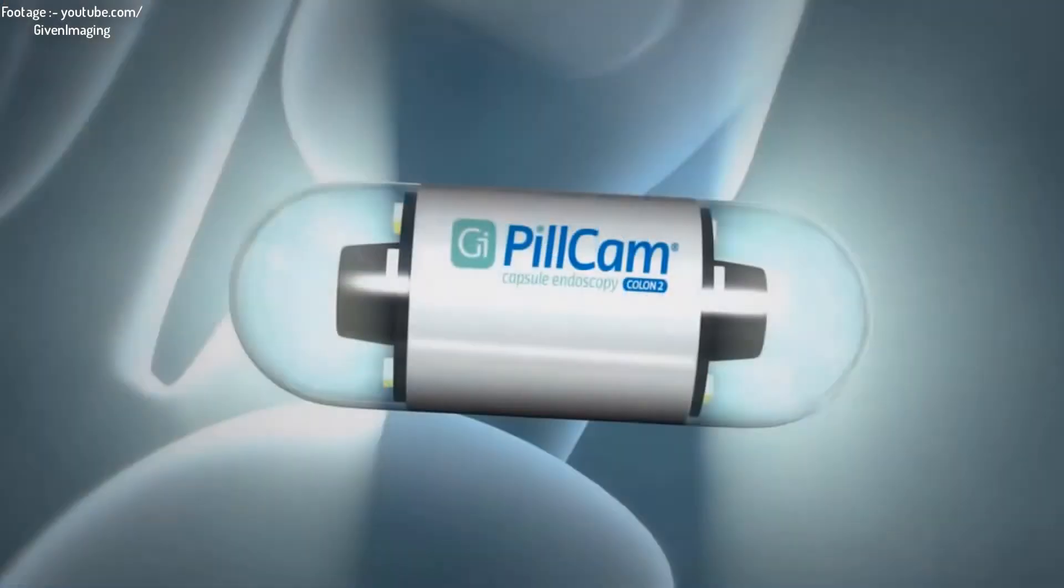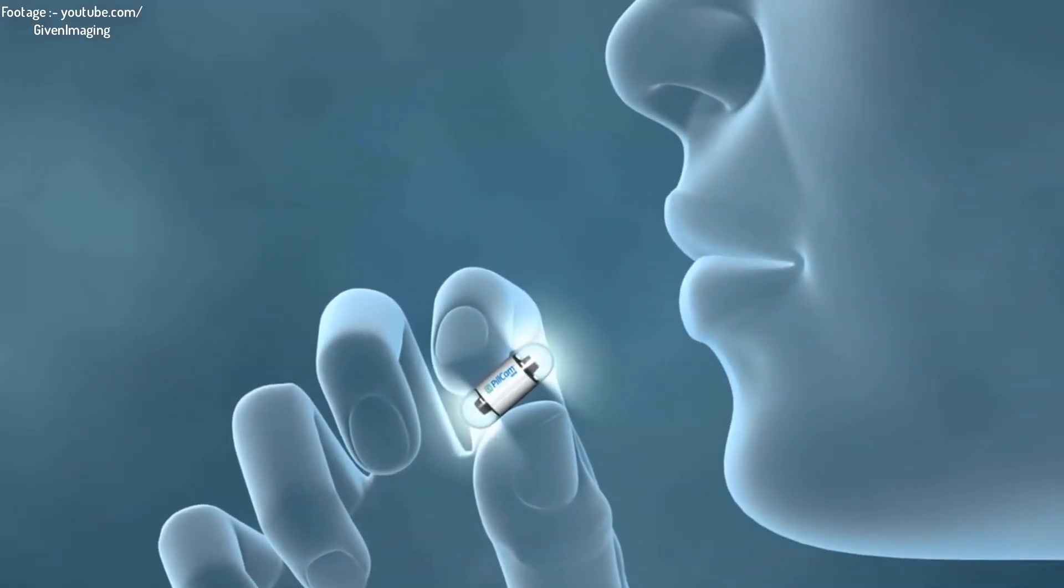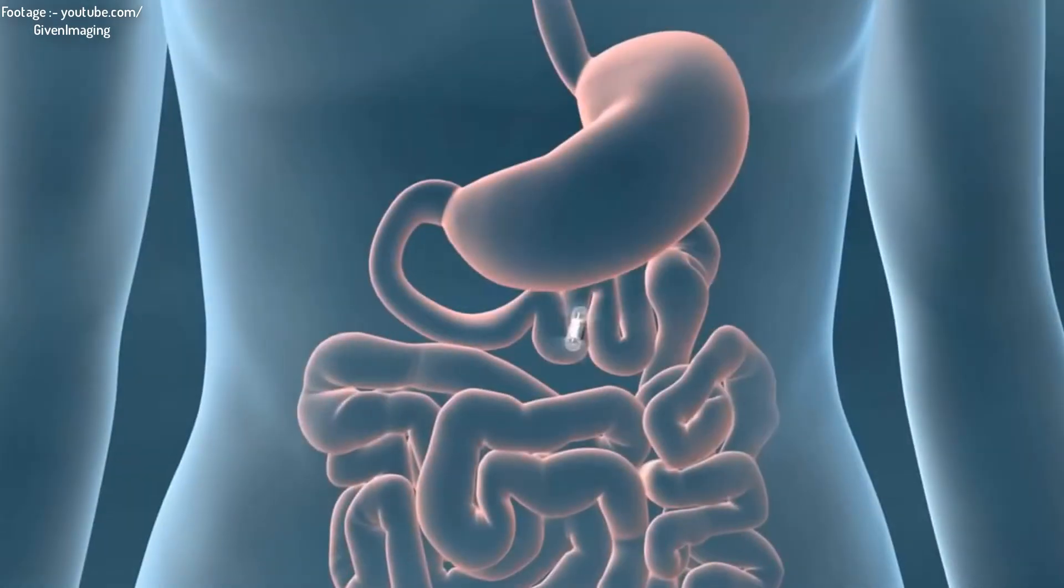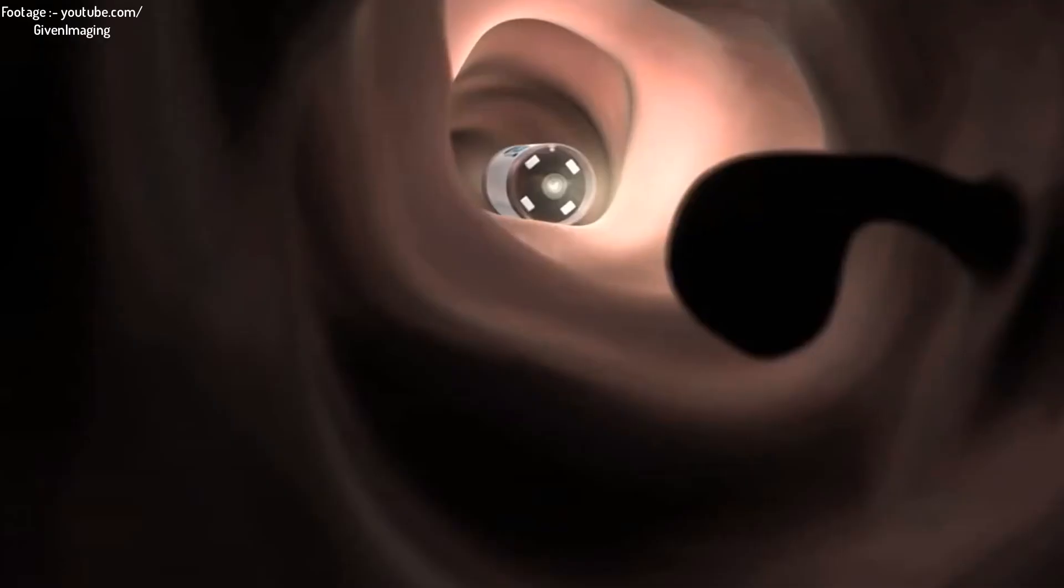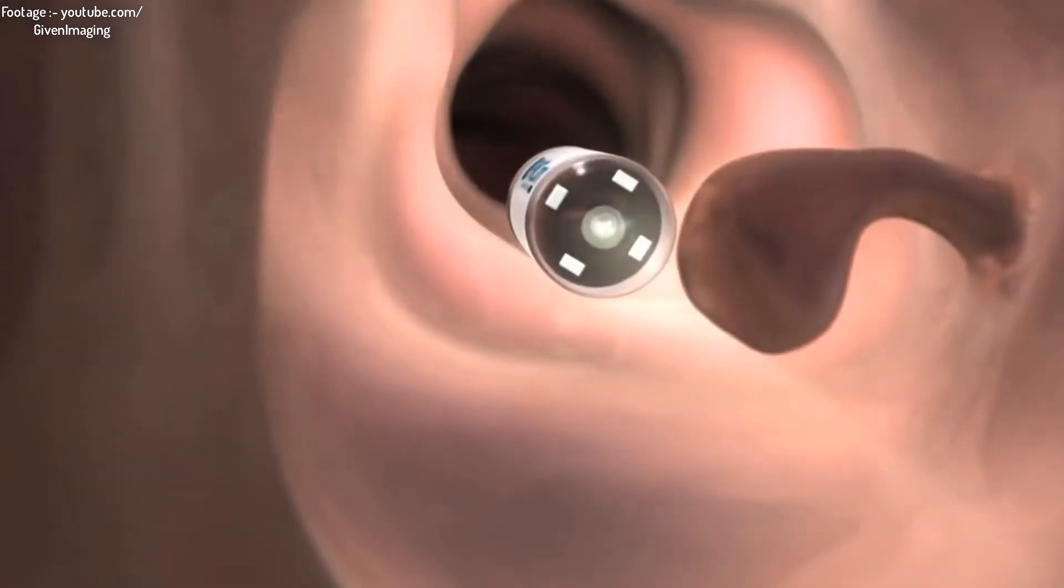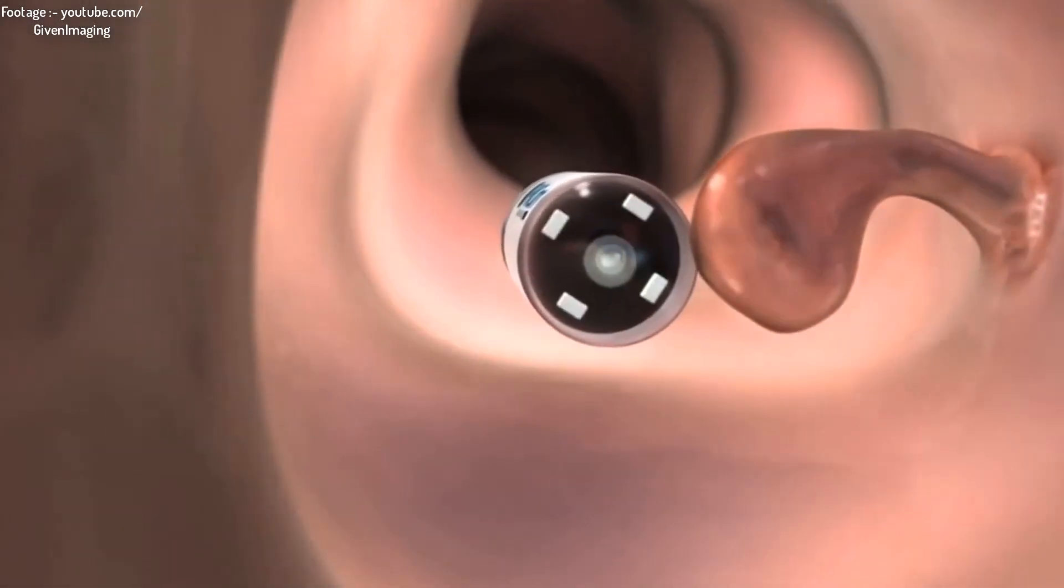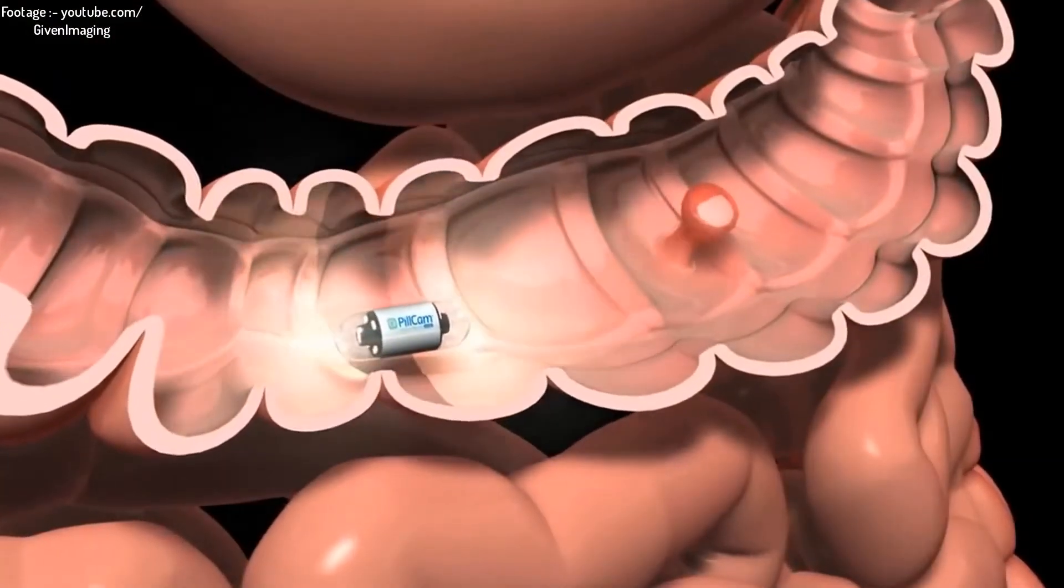Another company from Israel named Given Imaging has invented a PillCam series, which is composed of pills with ingestible cameras that can help doctors view different parts of the patient's digestive system. It is a painless alternative to tests like endoscopy or colonoscopy. This PillCam uses a camera to take high-speed photos as it goes down the intestinal tract.